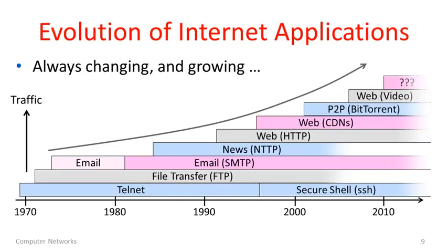Internet applications are always changing and evolving. This timeline gives you a sense of the dominant internet application and how it has changed over time. We really started around 1969-1970 with Telnet as an application — a remote terminal to a remote computer; today we'd use a secure shell. File transfer was also an early utility. Email, in various forms, was actually the first killer application of the internet, taking off very soon after ARPANET began to grow, and remained the dominant application for quite a while.